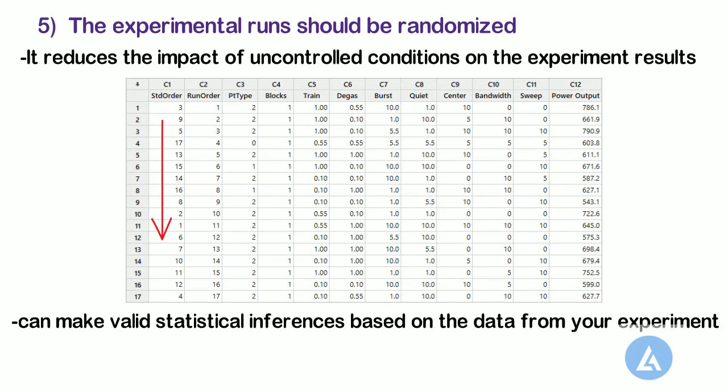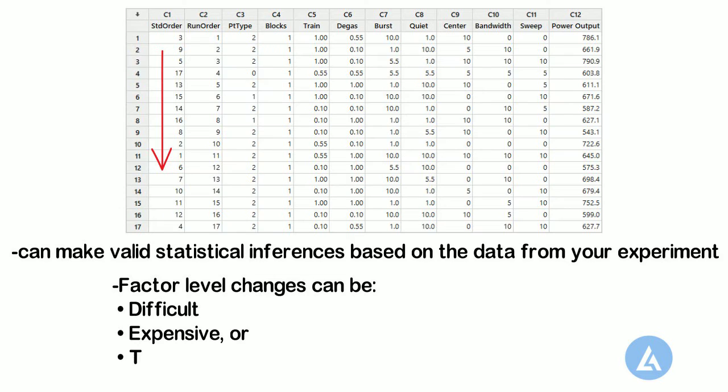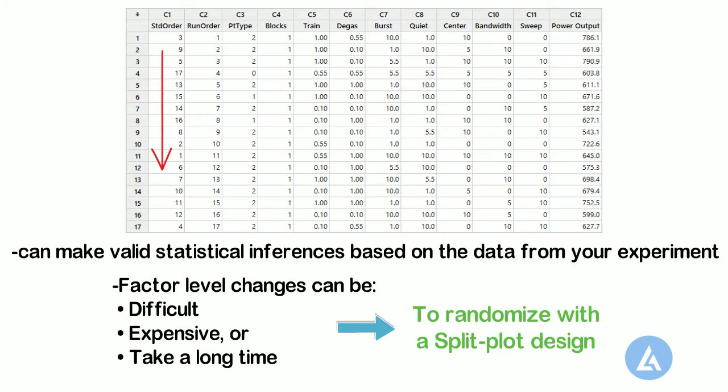In some situations, randomization may lead to undesirable run order. For instance, factor level changes can be difficult, expensive, or take a long time to produce a stable process. Under these conditions, you may want to randomize with a split plot design to minimize the level changes.